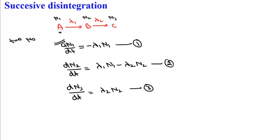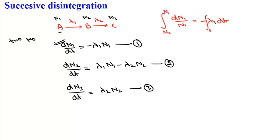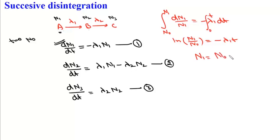Now we solve the first differential equation using variable separation. We write dN1/N1 equals minus λ1·dT, then integrate from N0 to N1 and from time 0 to T. This gives log(N1/N0) equals minus λ1·T, which yields our standard result: N1 equals N0·e to the power minus λ1·T.